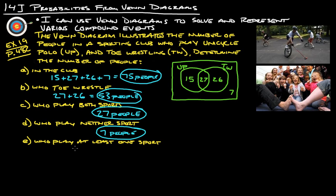And then play at least one sport. So that would be these people play just unicycle polo, these people play just toe wrestling, and these people do both. It doesn't say exactly one sport, but at least one sport. So we're going to add all three of those together. So we're going to add 15 and 27 and 26, which gives us 68 people. Another way that you could have done this is you could have taken the 75 total people and subtracted seven, and that would also give you 68.